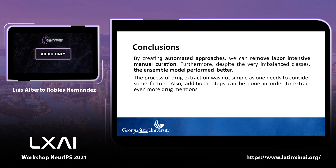In conclusion, automated approaches can remove labor-intensive manual work, making the process faster — especially from sources like Twitter, which contain a huge amount of data to handle and process. Despite the highly imbalanced classes in the training and validation dataset, the ensemble model outperformed any single fine-tuned model. The drug extraction process was not straightforward, as one must consider factors like misspelled drug mentions. Additional steps, such as a keyboard-distance approach to identify incorrectly written drug mentions, could be implemented to extract even more mentions.